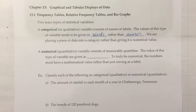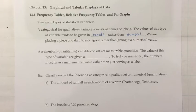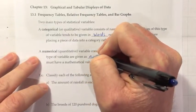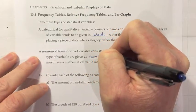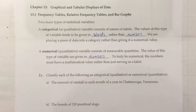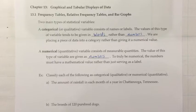On the other hand, a numerical variable, sometimes also called a quantitative variable — that's what you'll probably hear it referred to as in statistics — consists of measurable quantities. The values of this type of variable are given as numbers. To truly be numerical, the numbers must have a mathematical value rather than just serving as a label. We'll see some examples below of what that means.